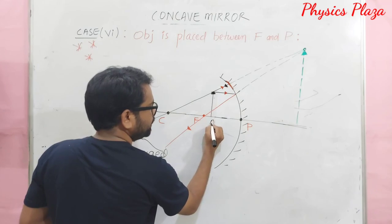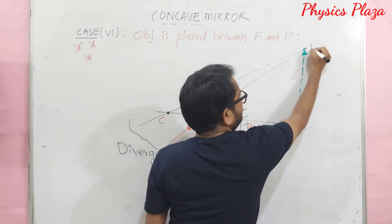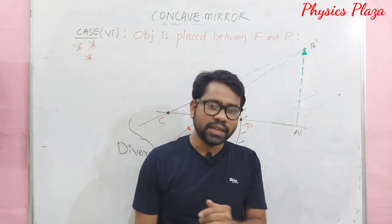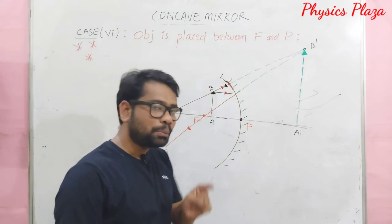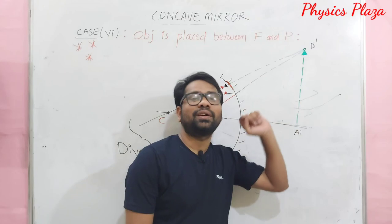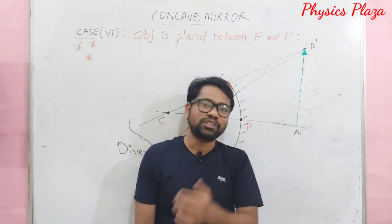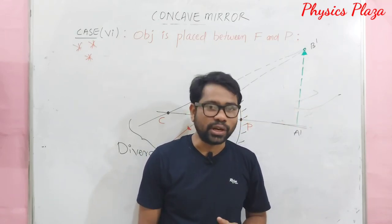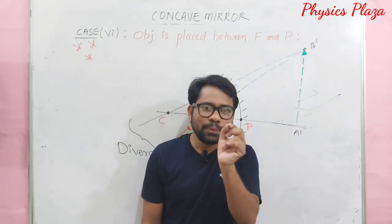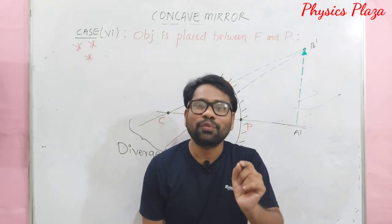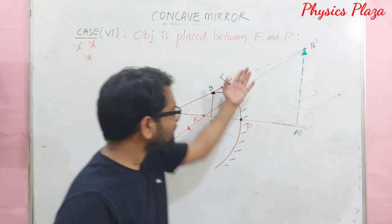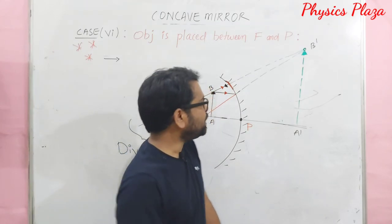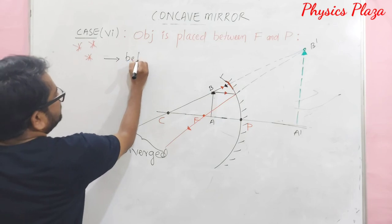The characteristics of the image when the object is between focus and pole: the image is formed behind the mirror. Since reflected light rays do not actually meet but only appear to meet when extended back, it is a virtual image. All virtual images are erect by default. The size of the image is magnified or enlarged. This is the case where the concave mirror acts as a shaving mirror.